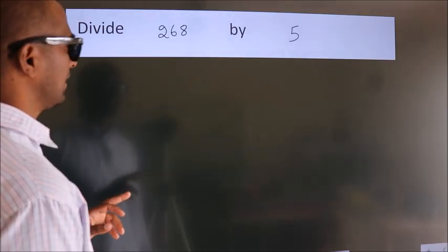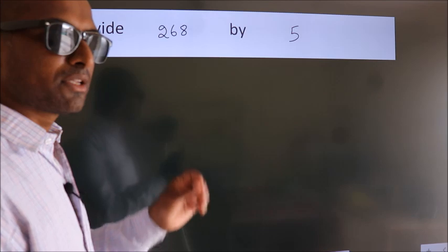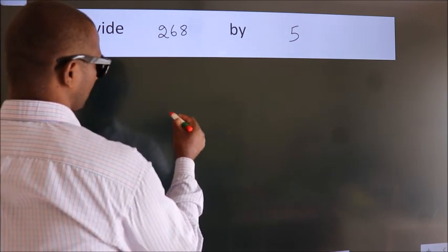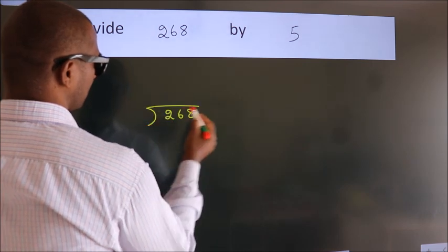Divide 268 by 5. To do this division, we should frame it in this way: 268 here, 5 here.